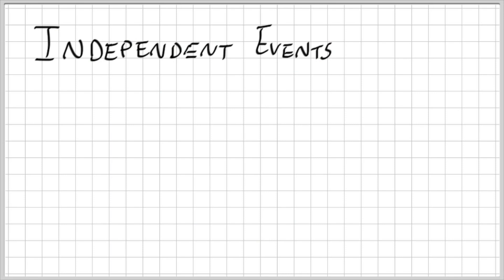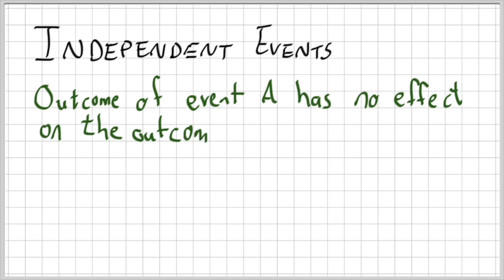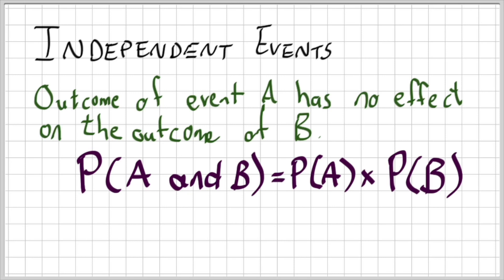The second thing we talked about was independent events. The independent events, remember, is that the outcome of event A has no effect on the outcome of event B. For instance, I flip a coin, I roll a dice. Whatever the outcome of the coin is not going to have an effect on the outcome of the dice. Unless the coin, for instance, hits the dice and it changes the outcome. With independent events, remember, the probability of A and B is equal to the probability of A multiplied by the probability of B. Always we're going to go back to this formula the moment we hear the words independent events.